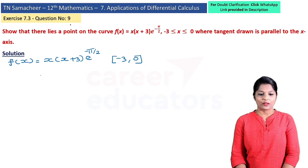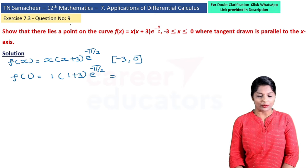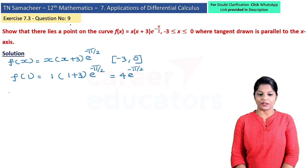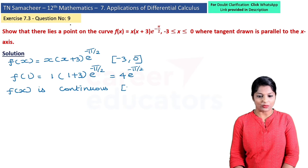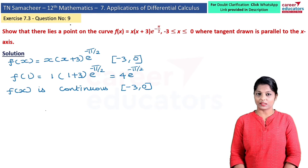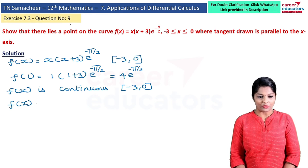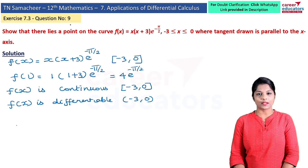For any value substituted in f(x), the function exists — for example, f(1) = 1·(1+3)·e^(−1/2) = 4e^(−1/2), which is a finite value. So f(x) is continuous on the closed interval [−3, 0] and also differentiable on the open interval (−3, 0).